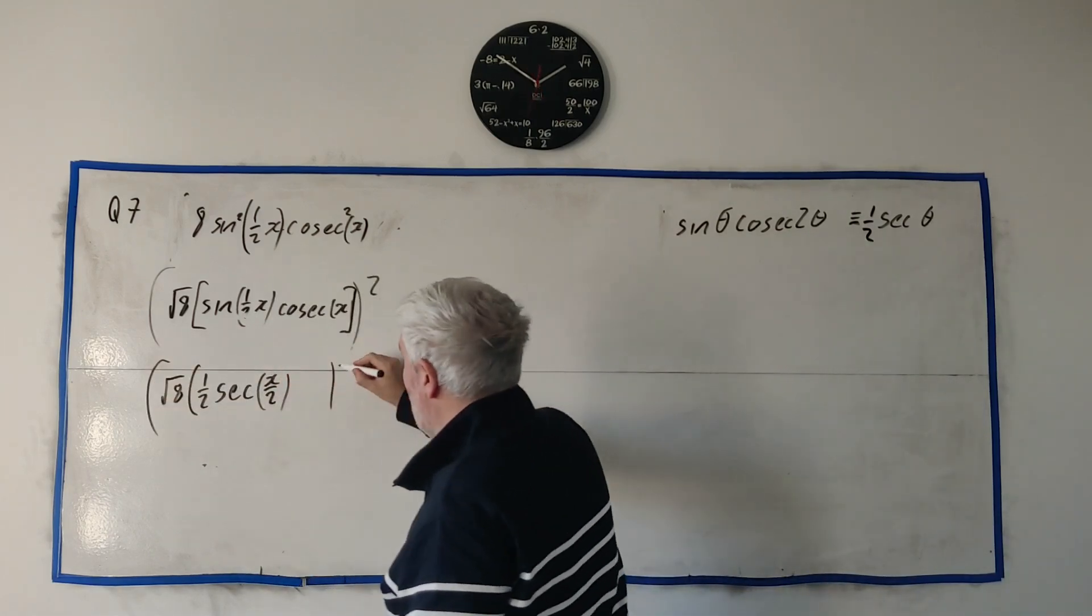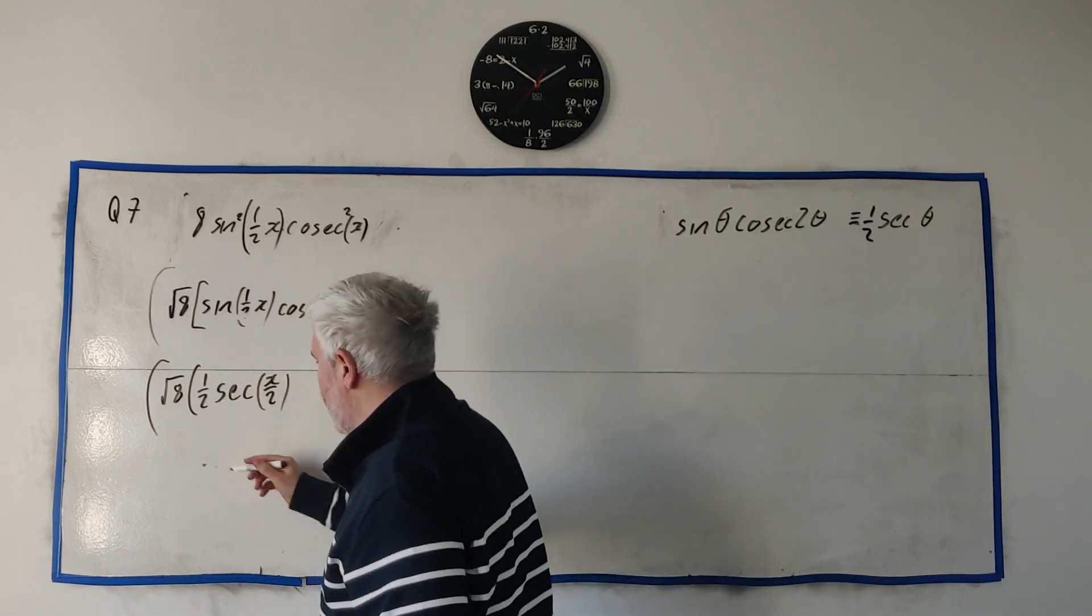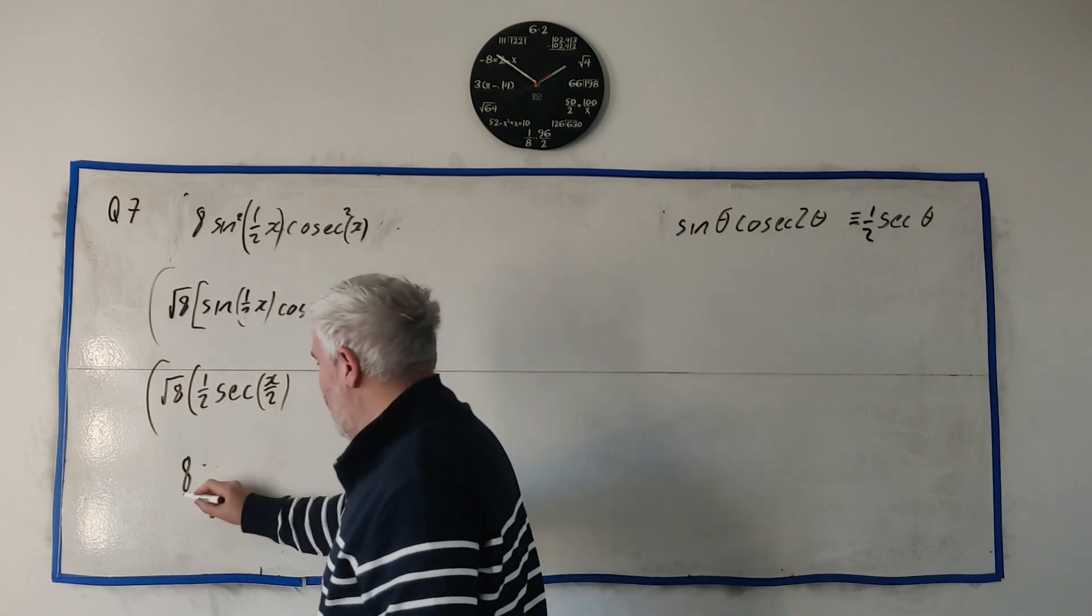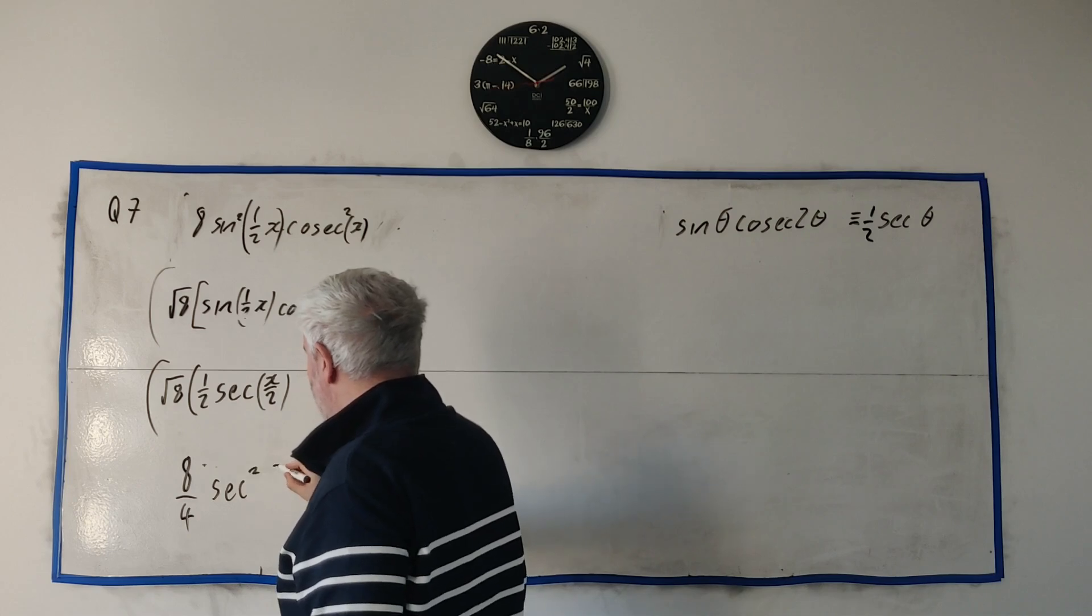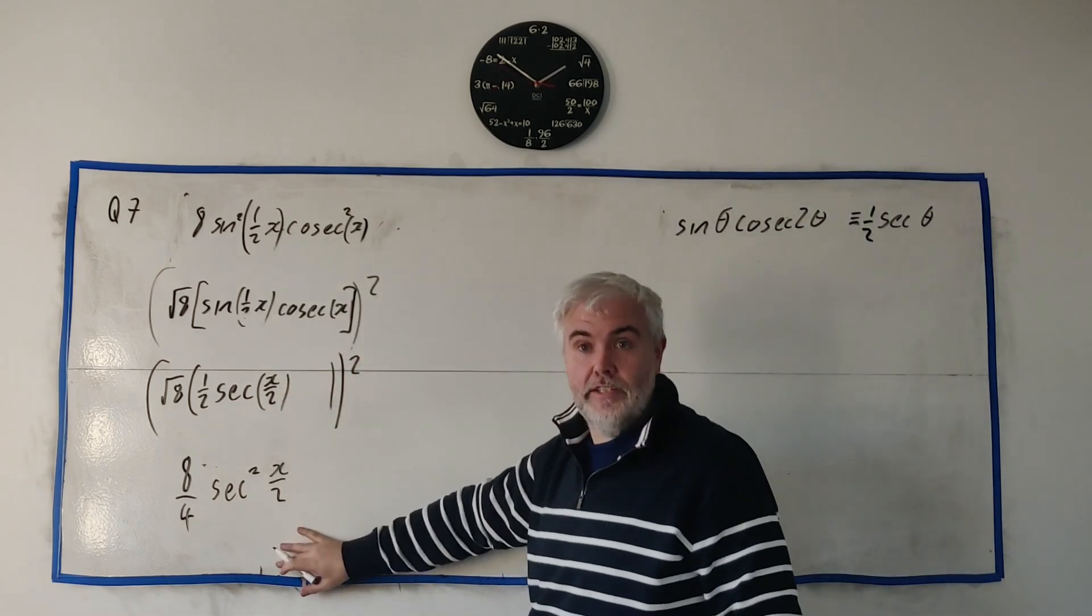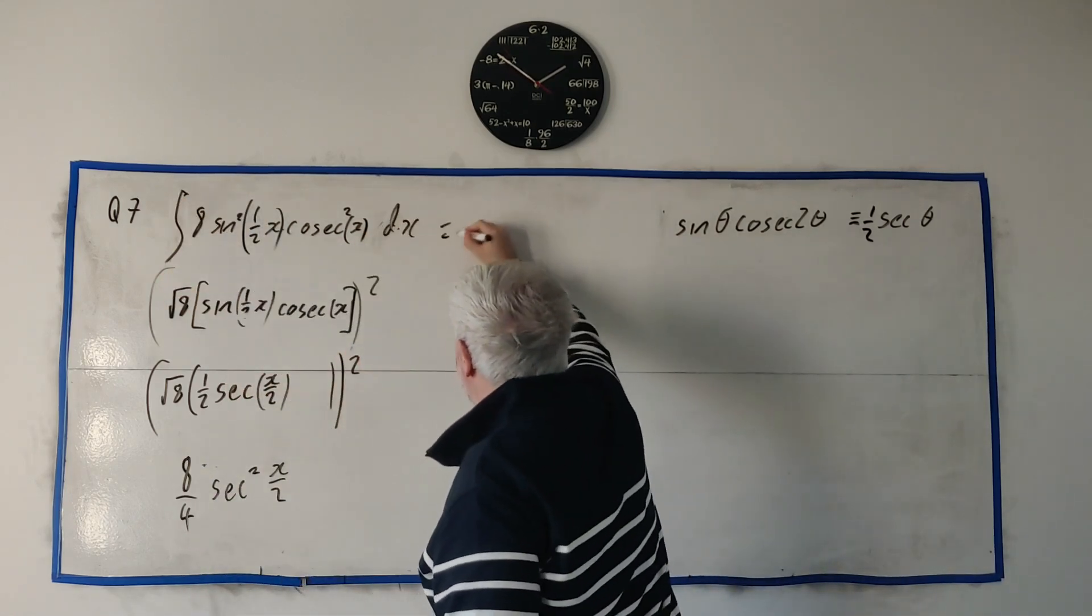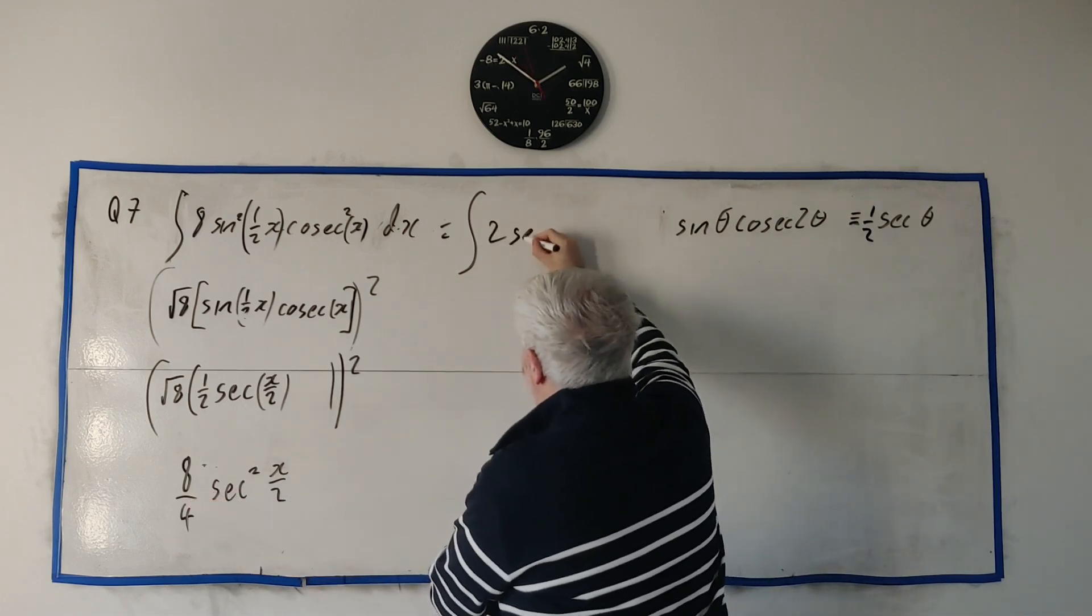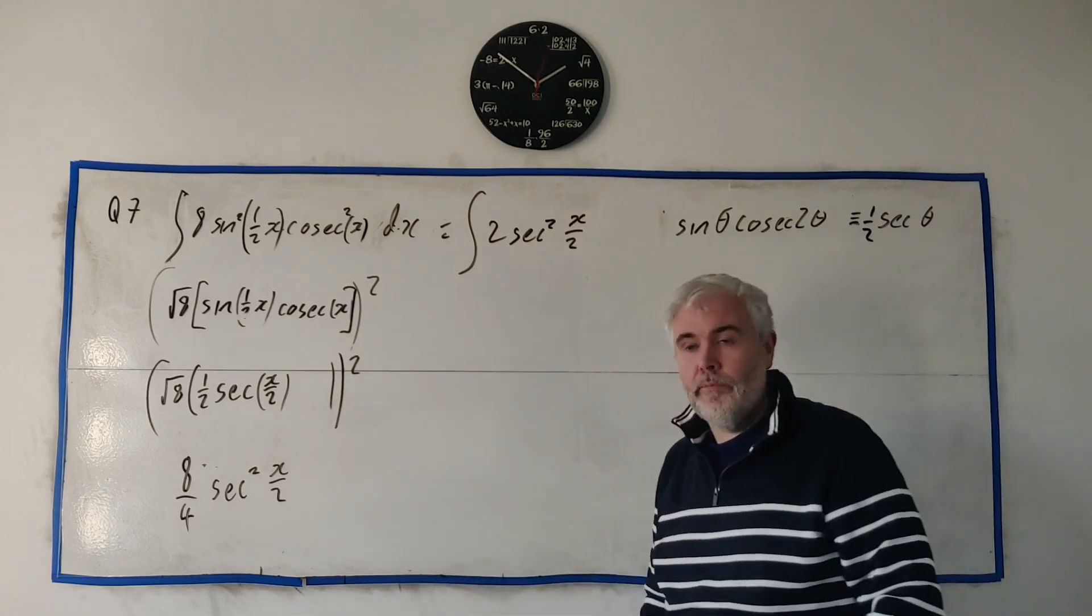So I can then change this square root of eight. Instead of this in here I can write a half secant whatever angle was here. And this angle is x over two. So that's the next confusing bit. All of it is squared. So put the square back in. And in fact we can square this all back in. That'll get an eight. One over two squared we'll get over four. Secant squared x over two.